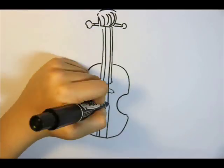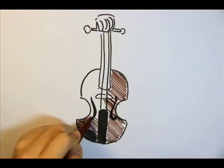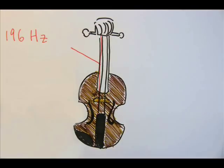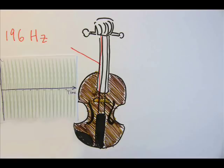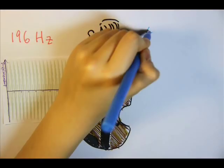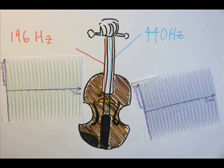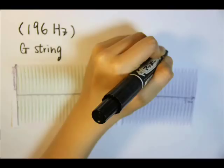Let's now look at some true cases. The frequency of a G-note produced by the fourth string of a violin is 196 hertz. By inputting f equals to 196, we can obtain this graph.